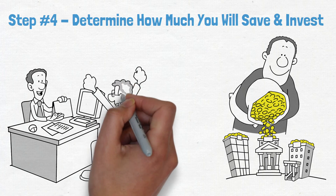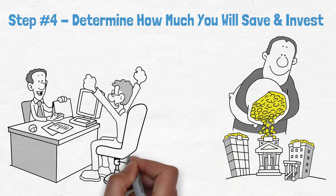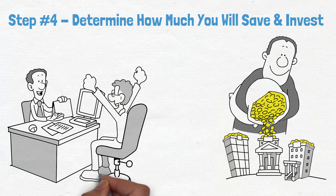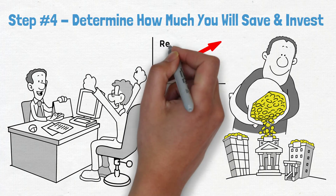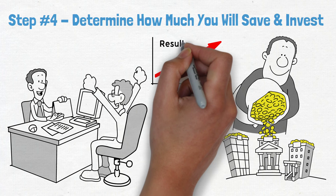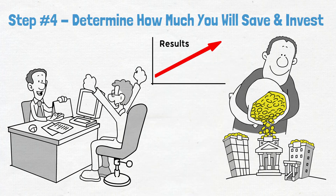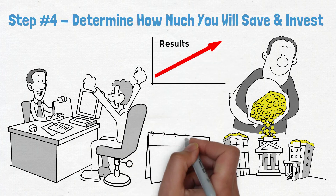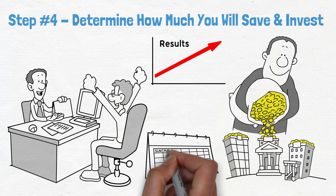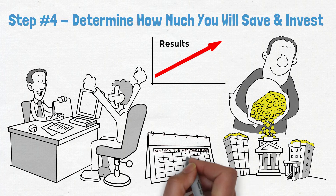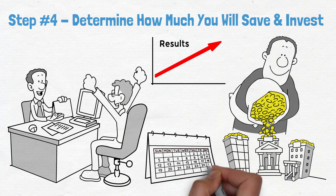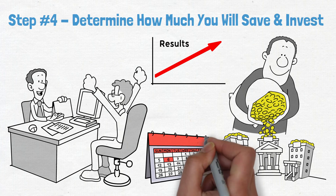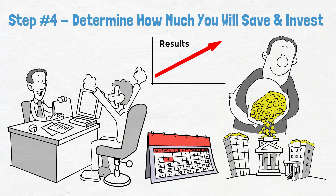If you can afford to save a little each month, you may need to accept a lower return in order to achieve your goal. On the other hand, if you are able to save a large amount each month, you may be able to take on more risk in order to achieve a higher return. In either case, it's important to have a clear understanding of how much you can afford to save and invest each month so that you can create a retirement plan that meets your needs.